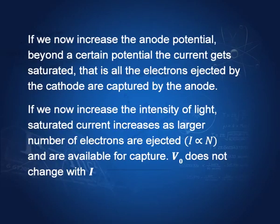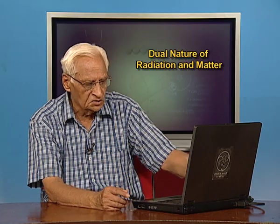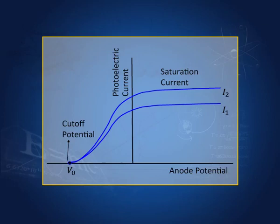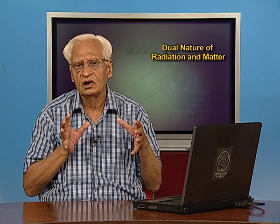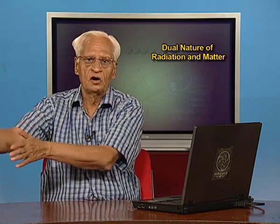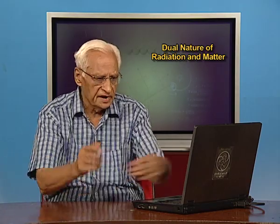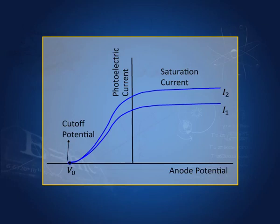If we keep the frequency fixed but change the intensity, the number of photons increases and a higher current is recorded. The shape of the graph remains the same and the cutoff potential remains the same, because V₀ is a function of frequency and work function — not intensity. When intensity increases, more photoelectrons are available for the anode to capture. There is a saturation current, at which all electrons emitted by the cathode are captured.